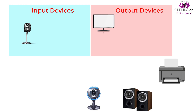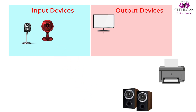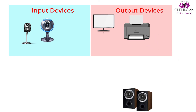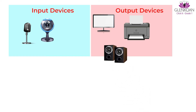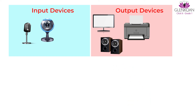Next is a webcam — this is also an input device. Can you identify this device? Yes, this is a printer, and this is an output device. The last one is a speaker, and it is also an output device. We hope that you have got a clear idea about the input and output devices. Thank you!